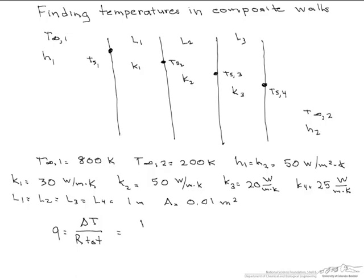To start with we are going to find the difference in temperature between T infinity 1, the surrounding temperature, minus T infinity 2, which is the surrounding temperature on the other side of the wall, divided by the total resistances.